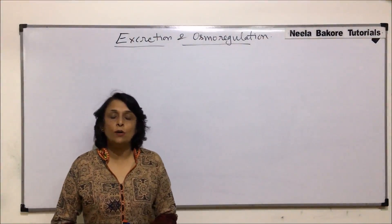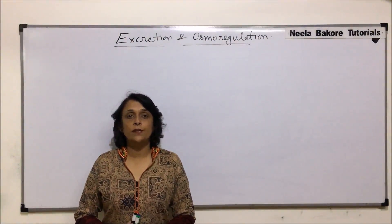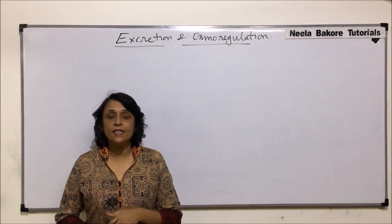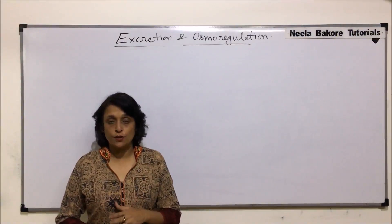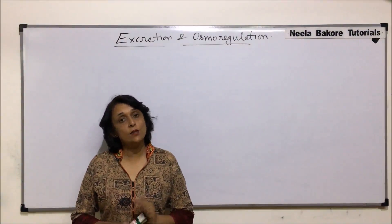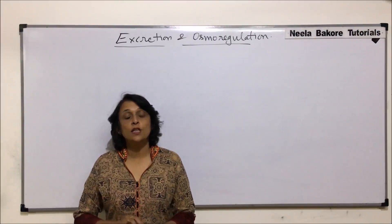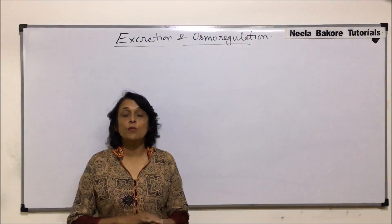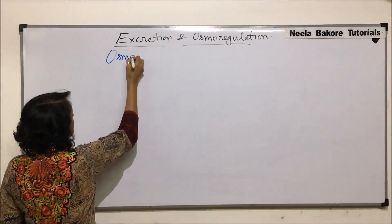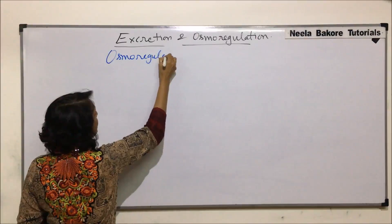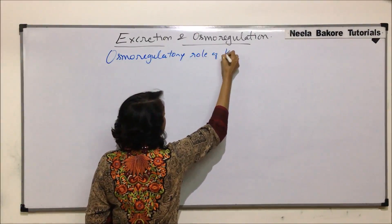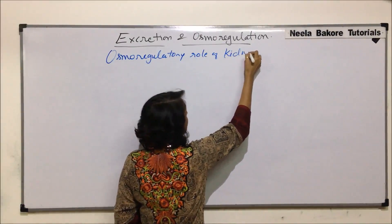In this section, we'll talk about the osmoregulatory role of the kidney. We'll know that our kidneys perform two main functions: one is elimination of nitrogenous waste, and second is osmoregulation. So here we are talking about the osmoregulatory role that is done by the kidneys.